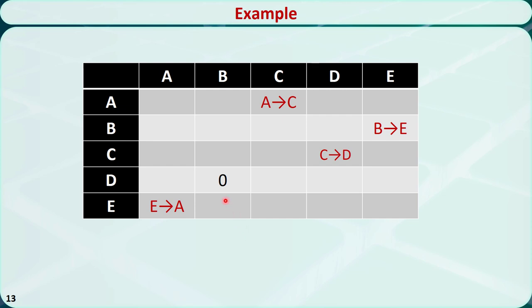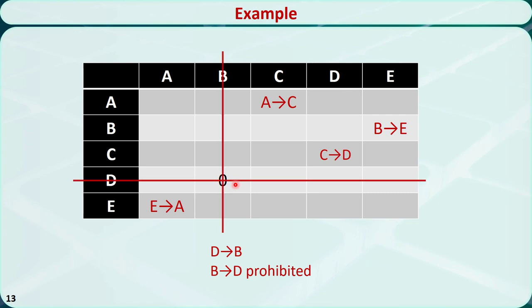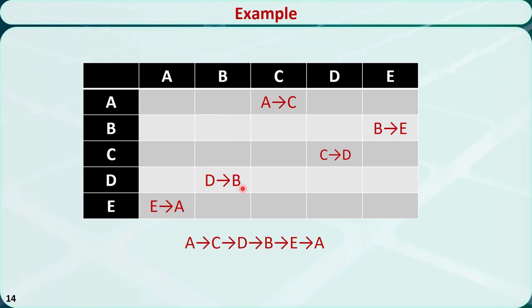We only have one row and one column left, so we just include an arc from D to B in the tour. Then cross out this row and this column. Let's now assemble the arcs together and the optimal solution is A, C, D, B, E, A.